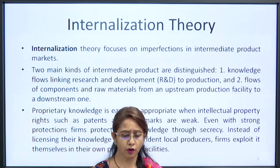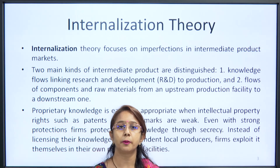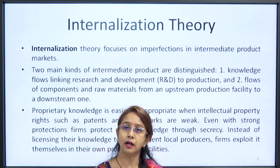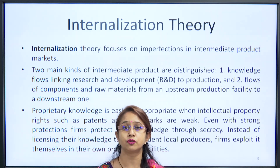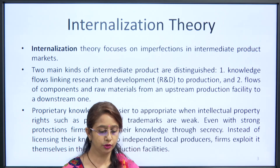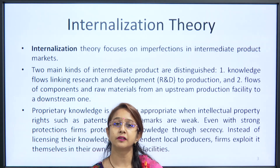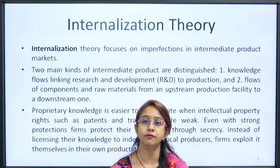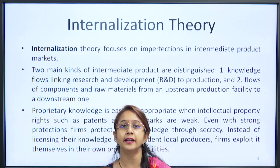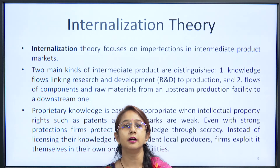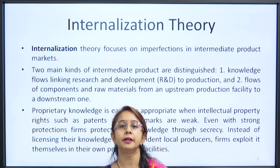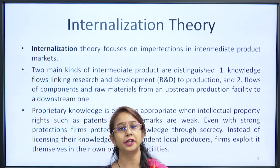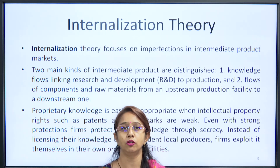Proprietary knowledge is easier to appropriate when intellectual property rights such as patents and trademarks are weak. Patents and trademarks should never be weak — they should be kept as a strong point of the firm through secrecy. Instead of licensing their knowledge to independent local producers, a firm can exploit it themselves in their own production facility, using it as internal strength. They can also give licenses to other local vendors and earn money from that as well.